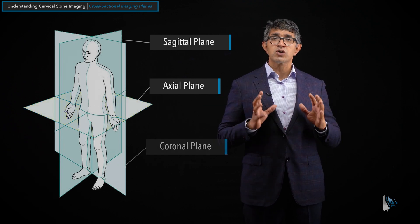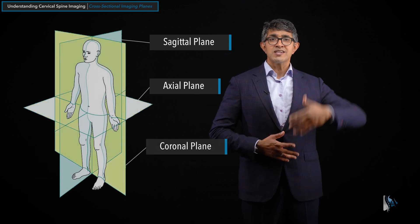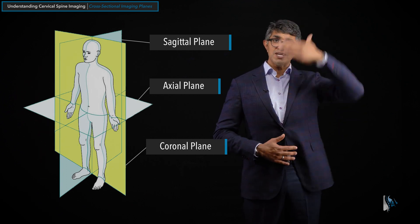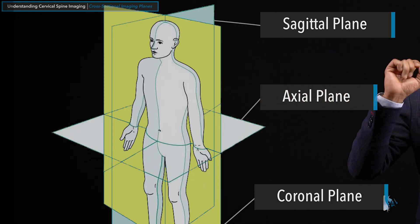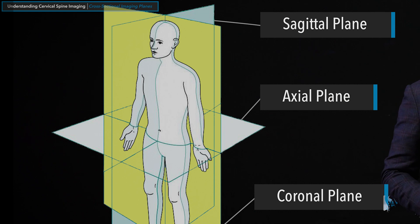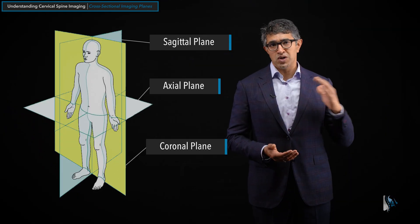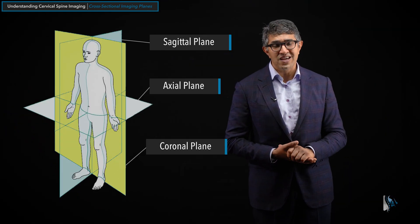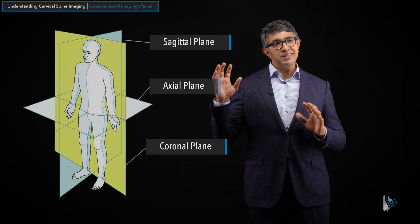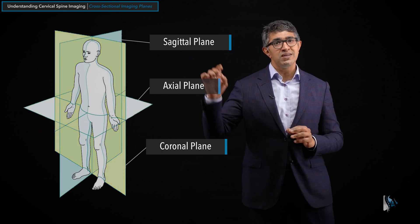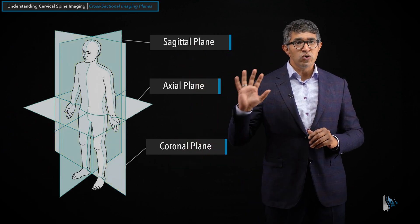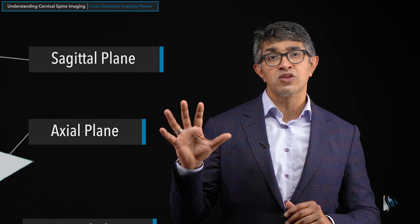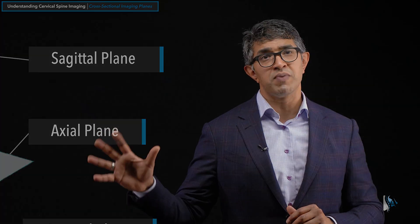The last sequence to talk about is the coronal plane — a plane where you take a slice right down the middle, depicted right here. Not every study is going to have a coronal plane; you'll see it most commonly on CAT scans. These three planes — the sagittal, the axial, and the coronal plane — are the planes we use when trying to understand the three-dimensional anatomy of the cervical spine.